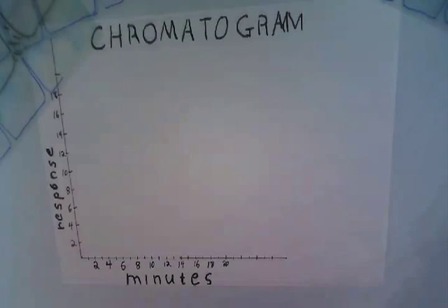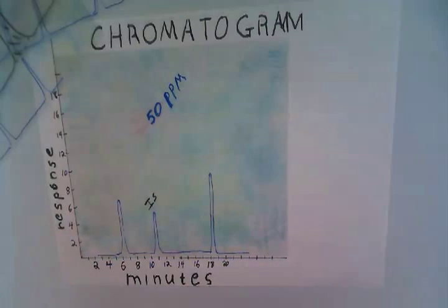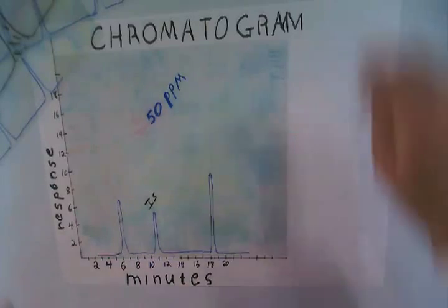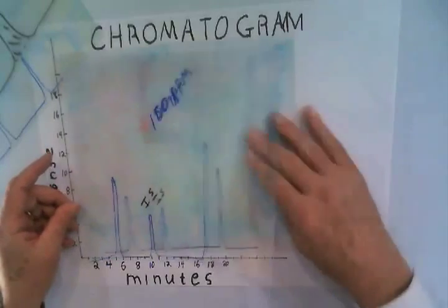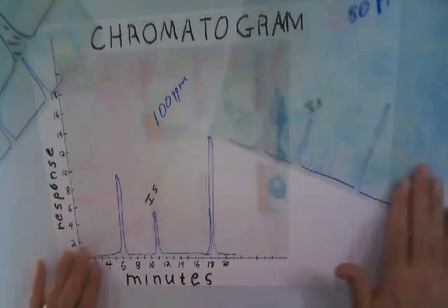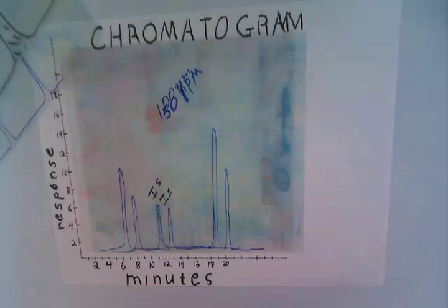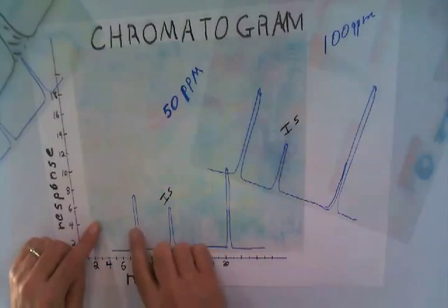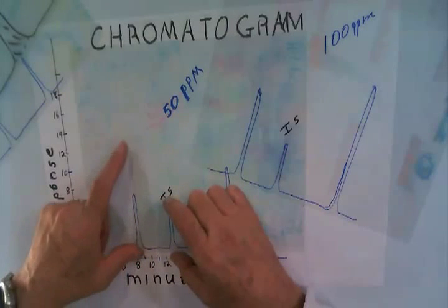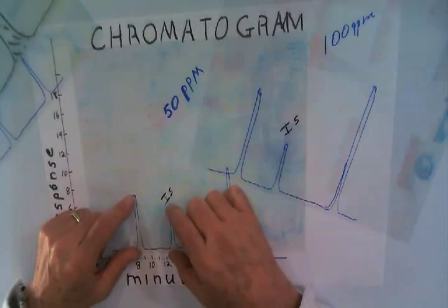So how does the internal standard work? With an internal standard, here we have a chromatogram with an internal standard at 50 parts per million. Notice we have an extra peak. This same chromatogram at 100 parts per million — notice we have the same peak, but now our quantitation peaks are bigger. The internal standard, however, stays the same. The foundation of internal standard quantitation is that instead of being related to the quantitation ion, it's related to the ratio between the quantitation ion and the internal standard. So instead of looking at the size of this, we're looking at the ratio between this one and this one. And that's the difference.